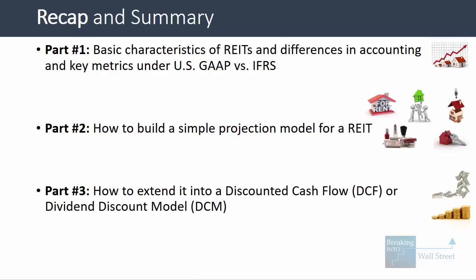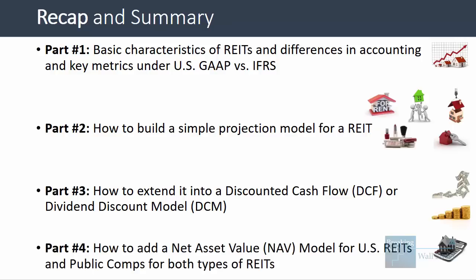For a DCF or DDM, extend the projections, link in items to calculate unlevered free cash flow, and calculate terminal value in the usual way — but carefully factor in additional shares issued in the future. The NAV model is key for US-based REITs: apply a cap rate to forward NOI, revalue other assets and liabilities, subtract liabilities from assets, divide by share count, and compare NAV per share to the current share price. For public comps, screen on real estate assets, geography, and sub-industry; use traditional metrics like EBITDA and EV/EBITDA alongside REIT-specific ones like FFO, P/FFO, NAV, P/NAV, and for IFRS-based REITs, book value and P/BV.